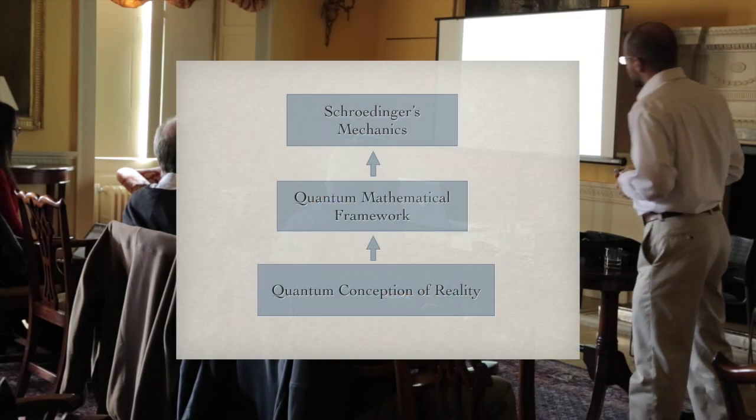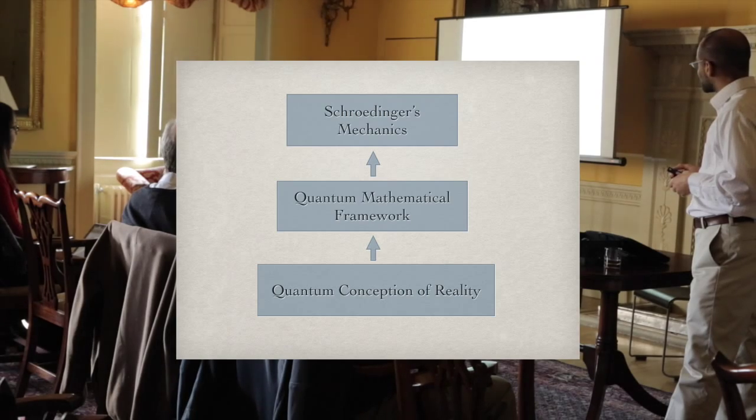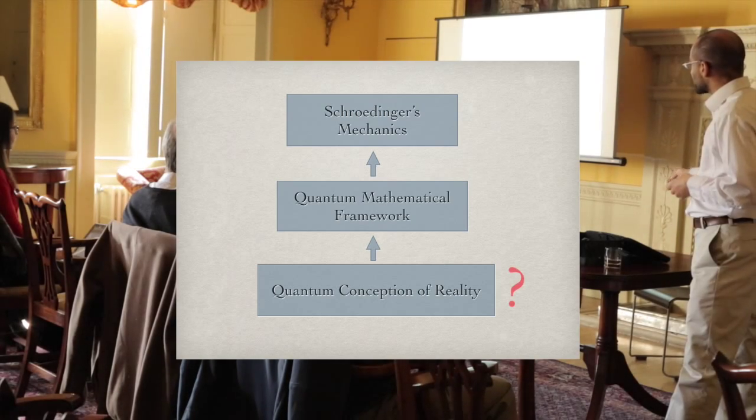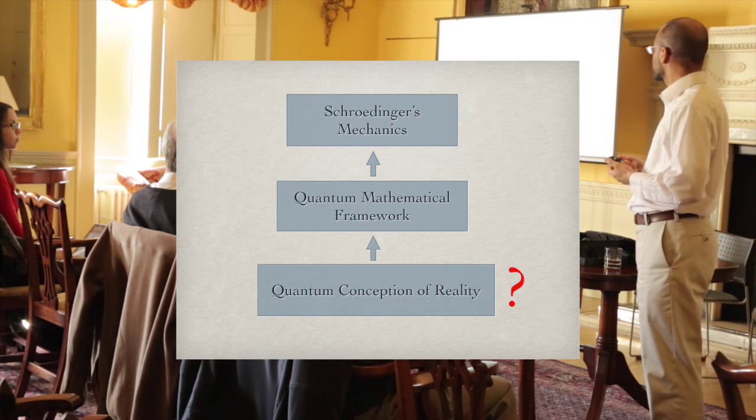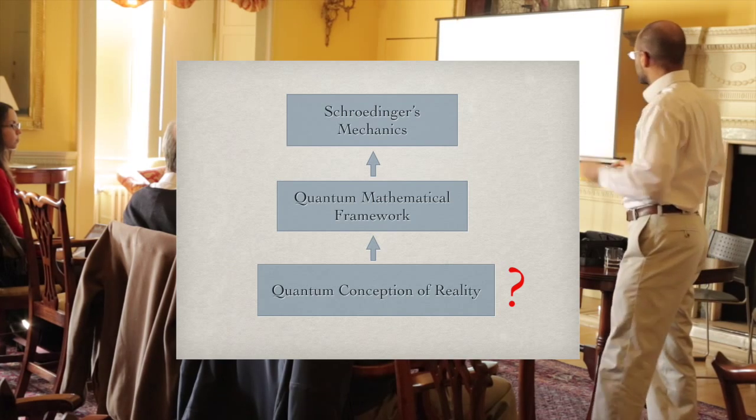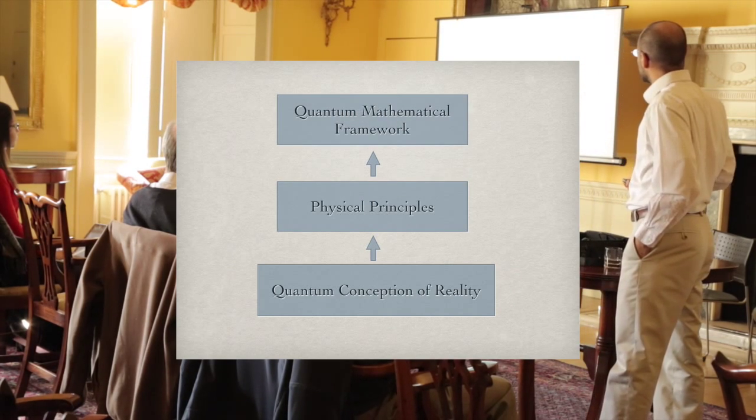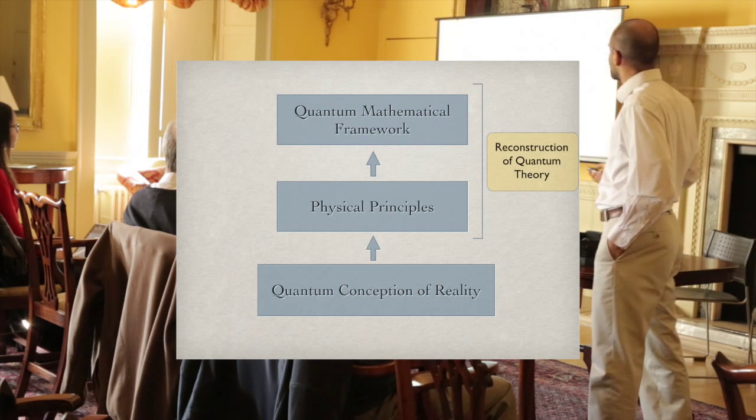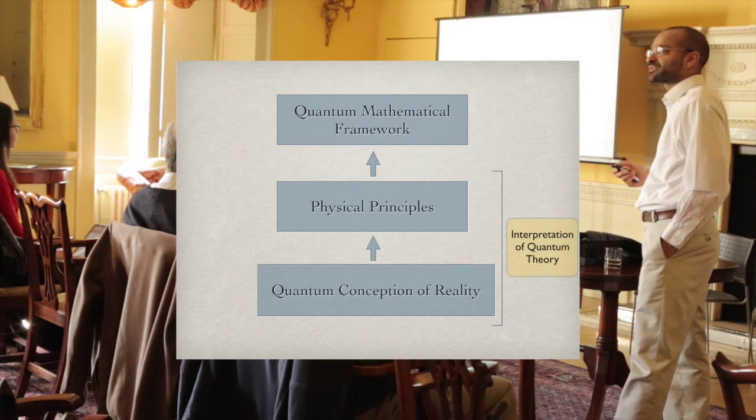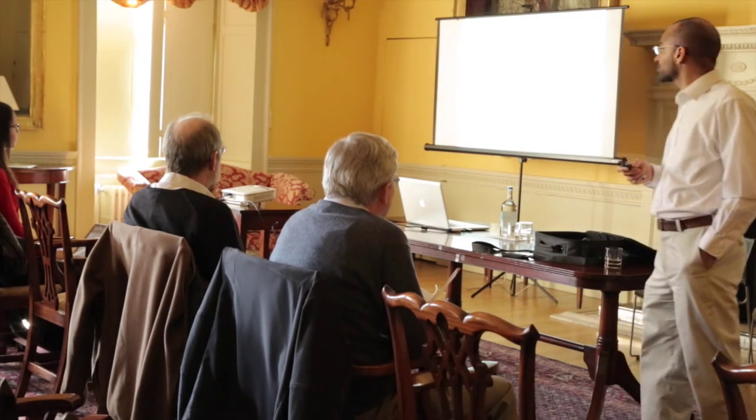Let me go to this picture again and ask, what can we say about the quantum conception of reality having done this work? The idea of the manual is that we insert some physical principles here and we have reconstruction. So what can we say from these physical principles? How can we interpret quantum theory? I'll just say a few words about this - much more could be said, but I'll keep this short.